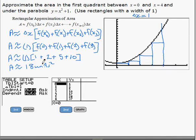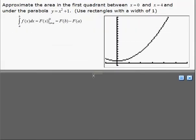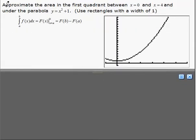Now, that's the approximation. The second question, we want to actually find the exact area. So, we're not looking for approximate anymore. Let's find exact area. And this is the next question on the handout. So the exact area in the first quadrant between 0 and 4 under the parabola. And we're not going to use rectangles anymore. We're going to use a definite integral.